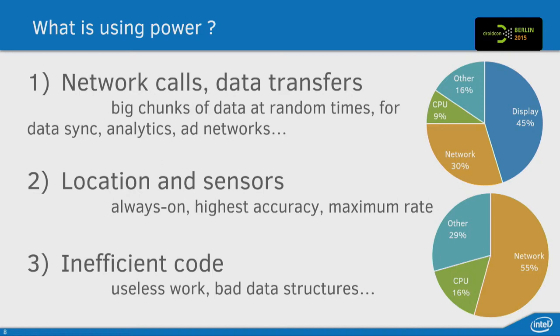I'll try to find some numbers — they can vary between devices, but they give a rough idea. Usually what consumes the most is network. Any time you transfer data, whether big chunks or small — for ads or even analytics — in any case all of this is consuming power. Then comes location and sensors. It's obvious when you use GPS it consumes power, and some sensors consume more power than others — I'll tell you which ones later. And lastly, CPU is consuming power, but it's really not as much as network or other components.